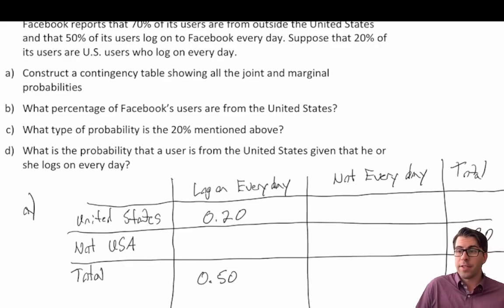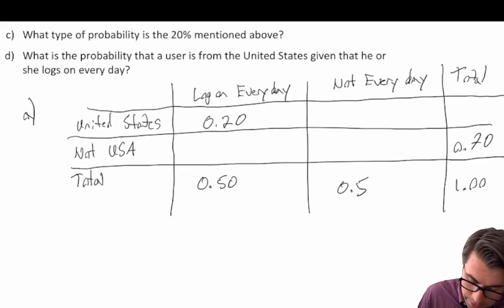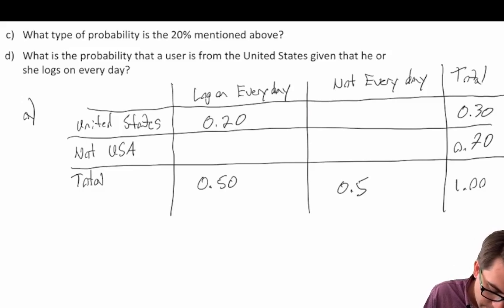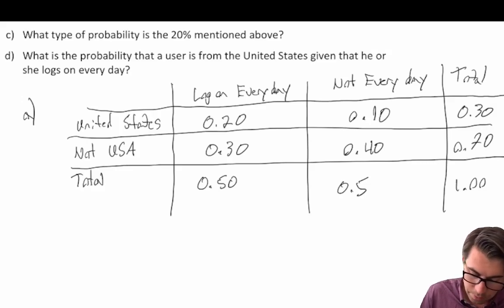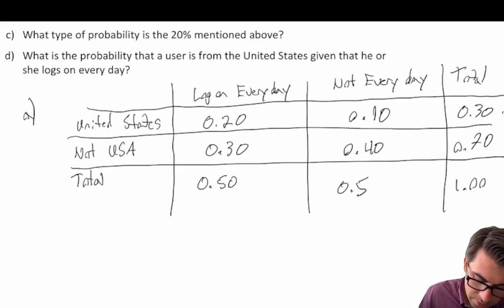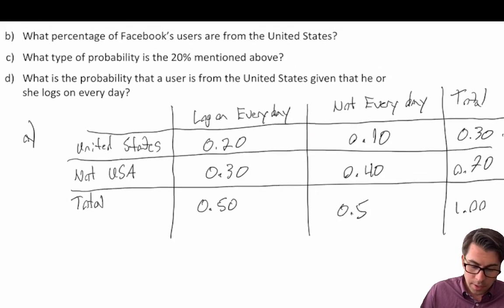Completing the table: 1.0 minus 0.5 gives 0.5 for not every day; 1.0 minus 0.7 gives 0.3 for USA. Then 0.5 minus 0.2 gives 0.30; 0.7 minus 0.3 gives 0.4; 0.5 minus 0.4 gives 0.10. All rows and columns check out, giving us a properly constructed probability contingency table.